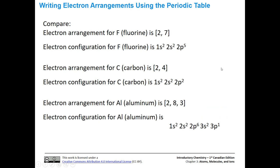Let's look at electron arrangements versus configurations. In introductory chemistry we use electron arrangements; in general chemistry we use configurations. For fluorine's electron arrangement: n=1 shell holds 2 electrons, and the n=2 shell — combining 2s and the two 2p's — holds 7 electrons. This gives us the arrangement 2, 7. You can think of it as shells: this is the n=1 shell and this is the n=2 shell.